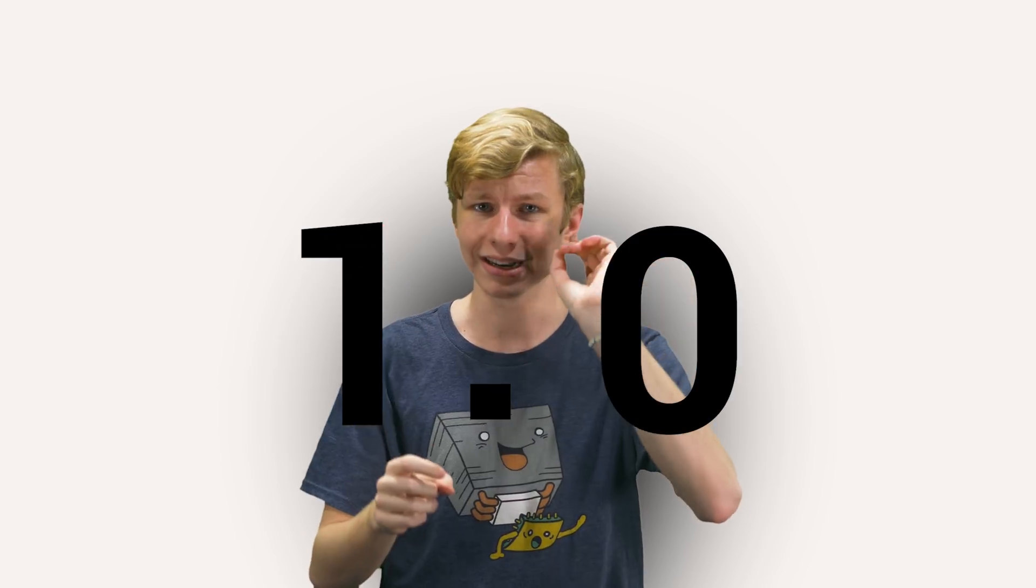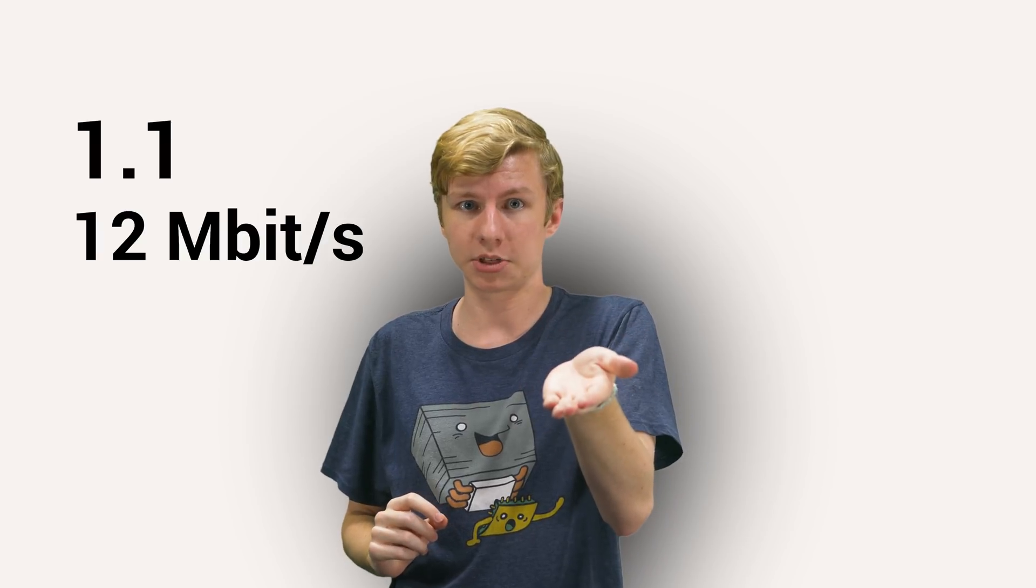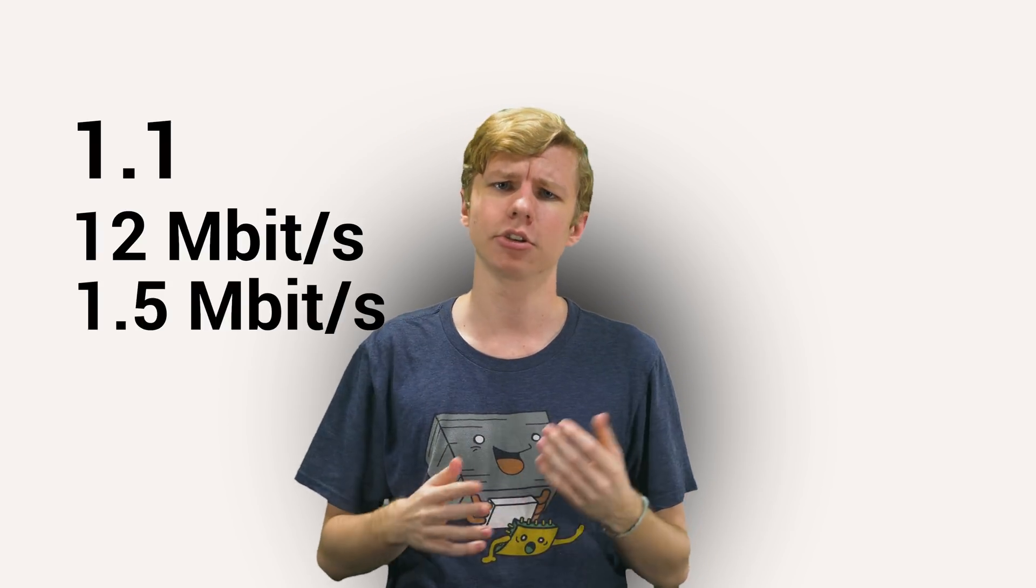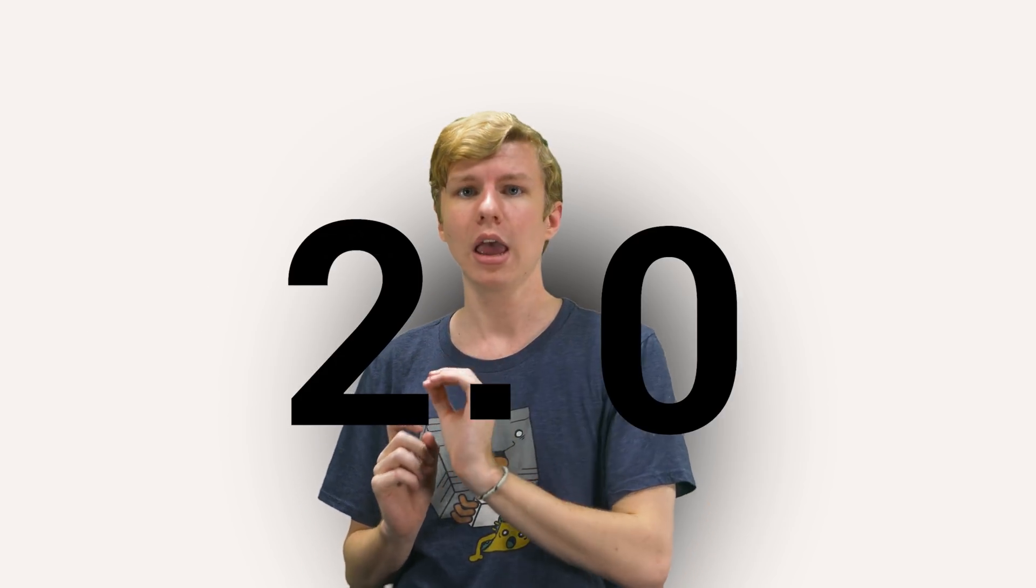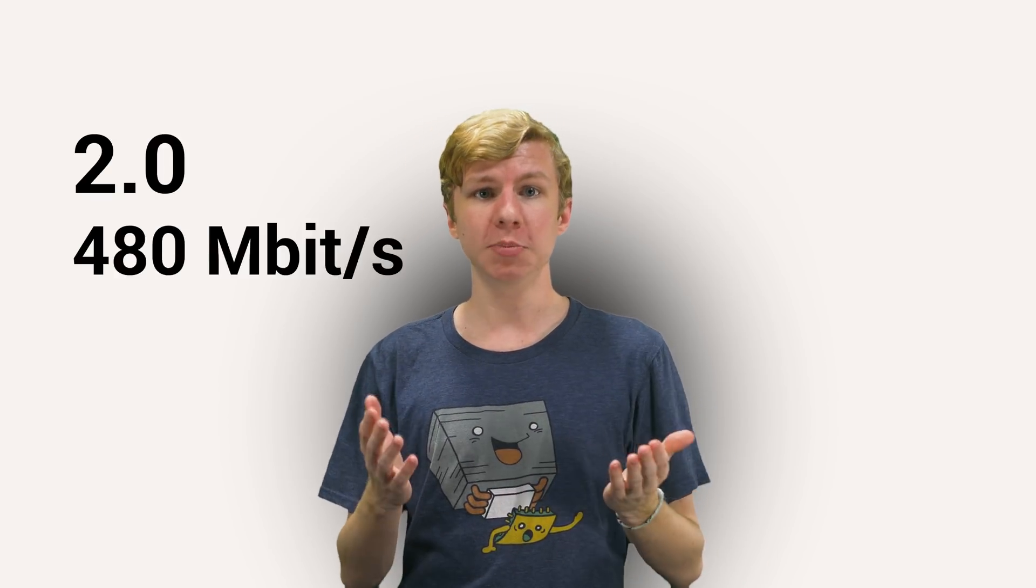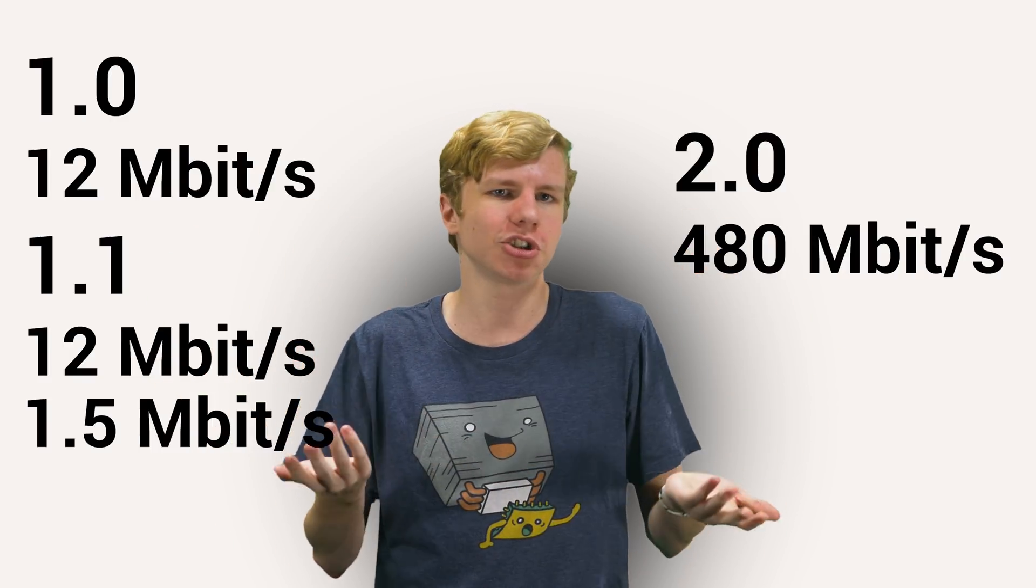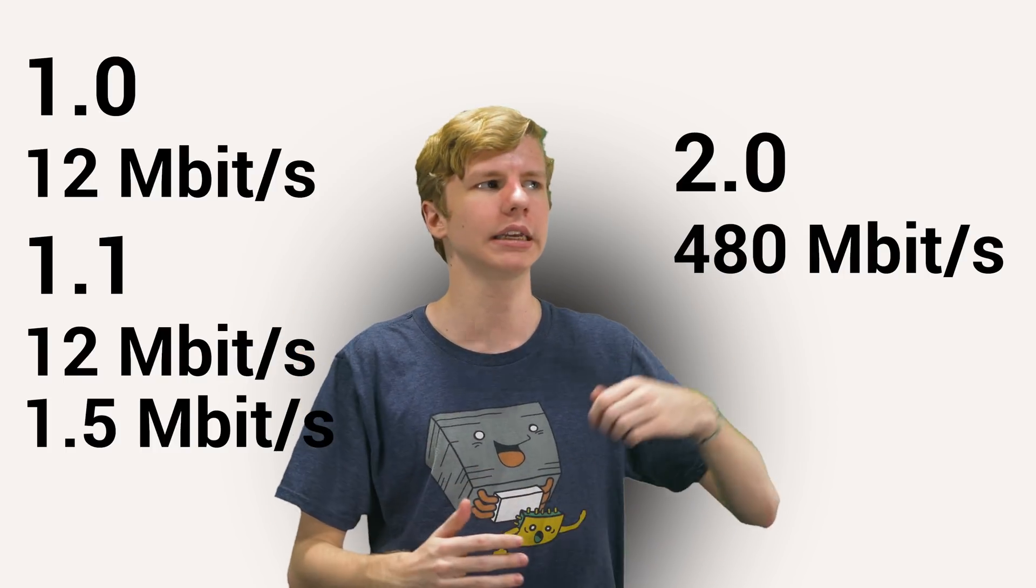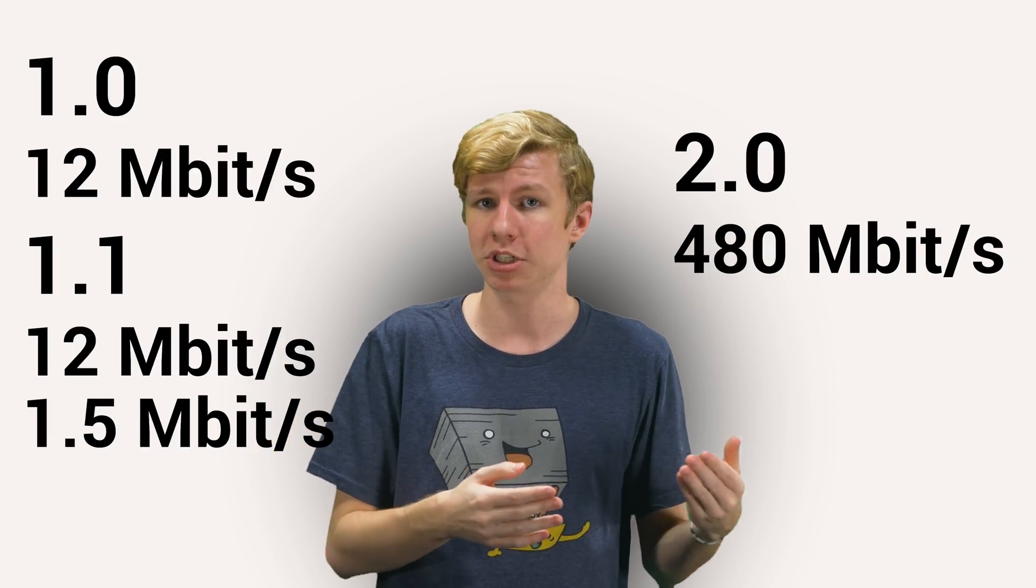USB 1.0 debuted in 1995 at 12 megabits per second, a good improvement already over serial and parallel. USB 1.1 came shortly after, which could still do 12 megabits per second, but also 1.5 megabits per second for smaller, more efficient device operation. USB 2.0 came in 2000 at a whopping 480 megabits per second. USB devices using any of these standards were fully forwards and backwards compatible. And they'll just operate at the speed of the lowest link in the chain. So plugging in a 1.1 device into a 2.0 port will work just fine just at 1.1 speeds and vice versa.